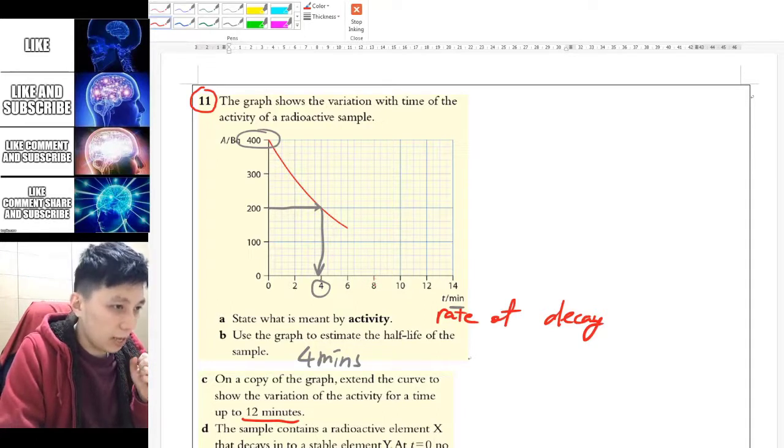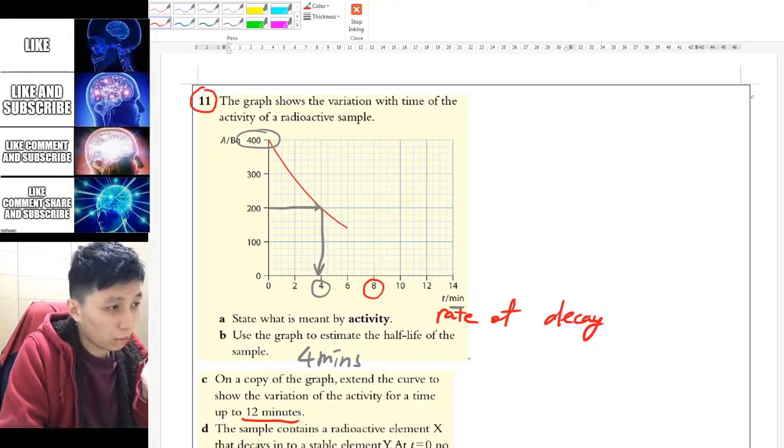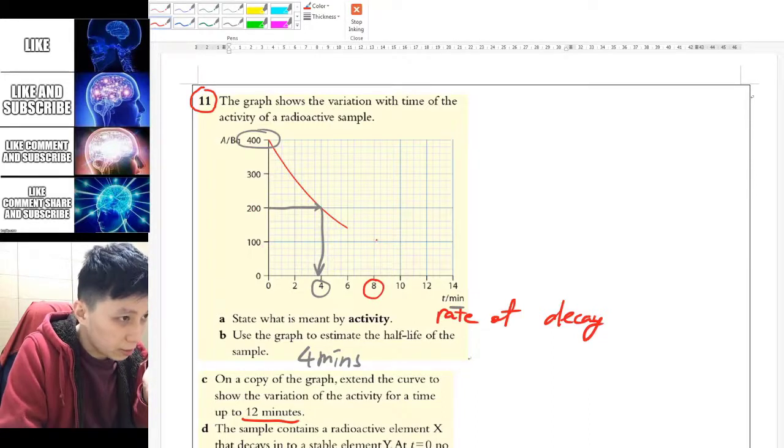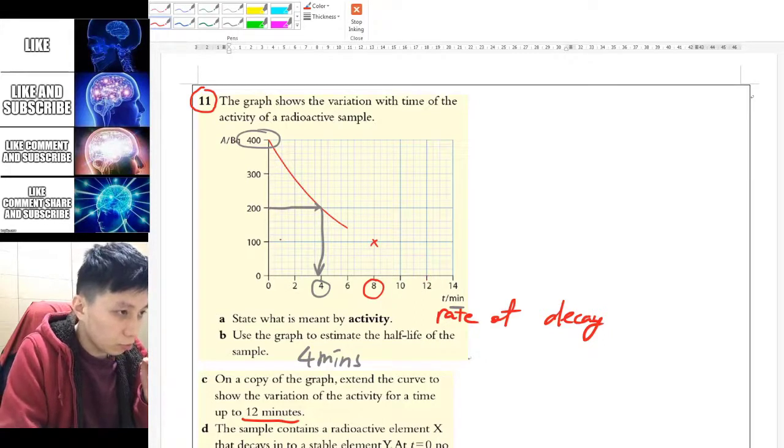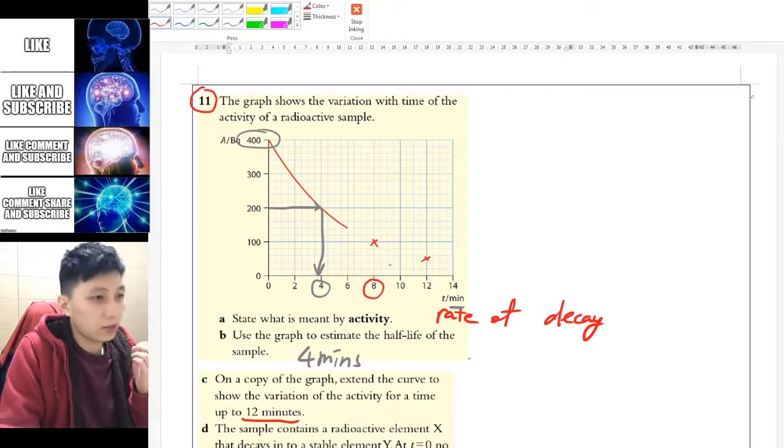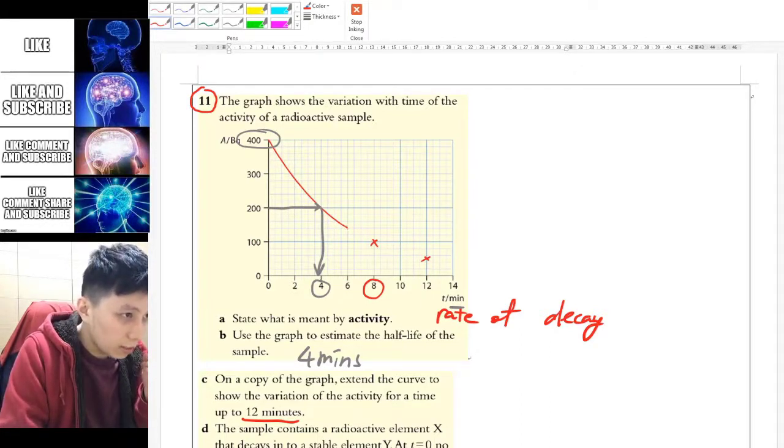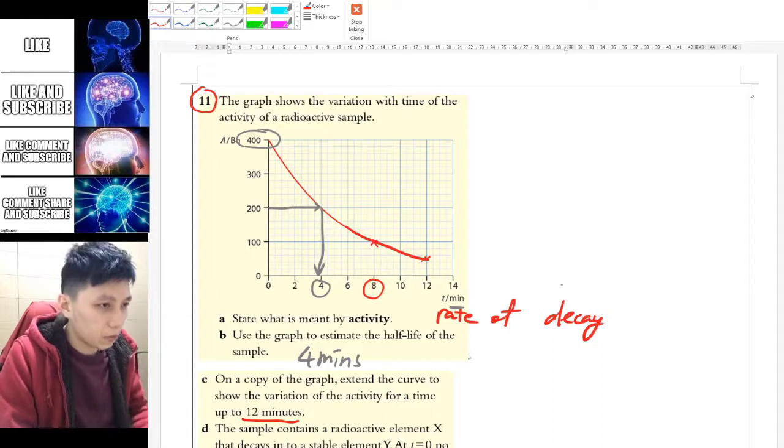So since you know 4 minutes is the half-life, and so obviously 8 minutes is another half-life, which you draw from 200 to 100. So that means this point. Okay. And up to 12 minutes, you will draw from 100 to another half, which is 50.